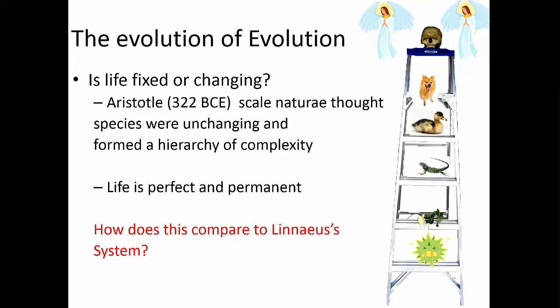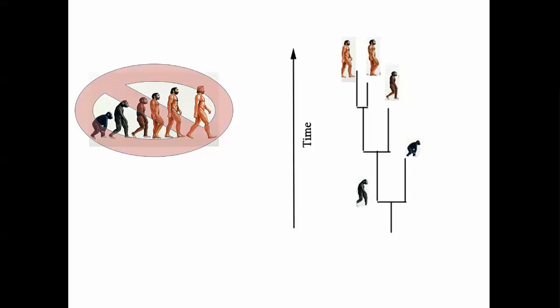Looking all the way back to Aristotle in 322 BCE, he had this thing called the scale of nature - he thought all life was organized in a hierarchy by the gods, with everything unchanging. Humans were at the top, gods above humans, plants at the bottom. Life was supposedly perfect and permanent - things would not go extinct, new things would not arise. Later, Carl Linnaeus started naming and categorizing things. One important misconception is that evolution is a simple linear progression from monkey to humans - that is not how evolution actually works.